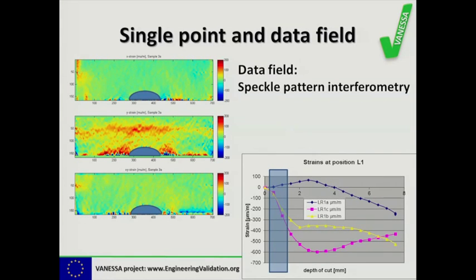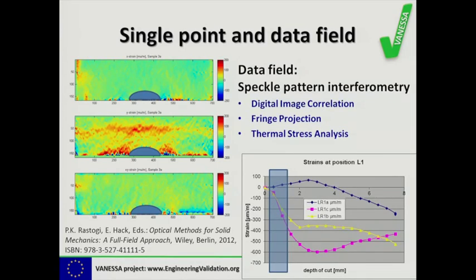You end up with a set of images representing the strain components in X, Y, and XY cross direction. You can see there is a field of strains rather than points of strains, and you can also see whether you have glued the strain gauges in the right position. Instead of speckle pattern interferometry, you can also use other full-field techniques such as digital image correlation, fringe projection, or thermal stress analysis for getting shape, deformation, strain, or stress values.